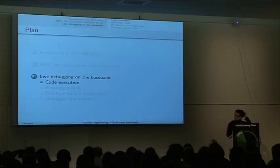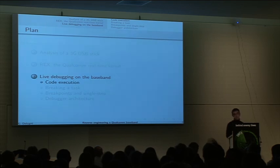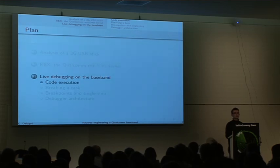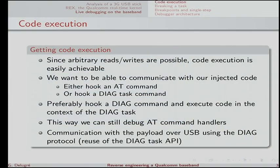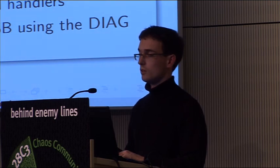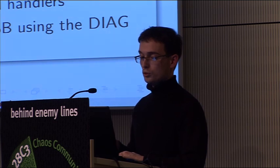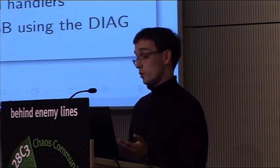How is it possible to get code execution? Given what I told about the diagnostic mode, it's very easy — obviously — because you have arbitrary read and write in RAM. So code execution is essentially free. You want to upload your code but also communicate with it easily. The two main ideas would be to either hook an AT command or hook a diagnostic command. I prefer to hook a diagnostic command in my case because it allows me to debug the AT command handler. If my debugger runs in the context of the diagnostic task, I cannot debug the diagnostic task.